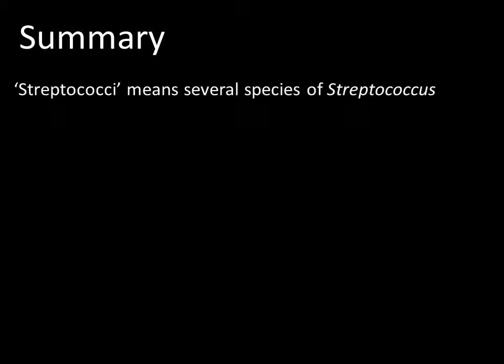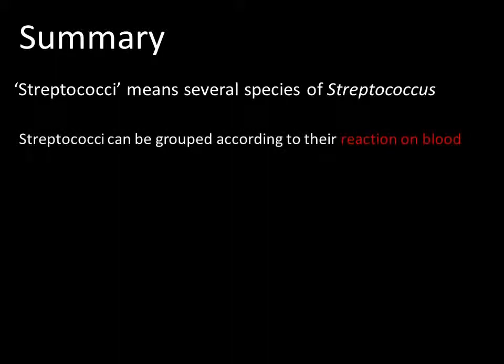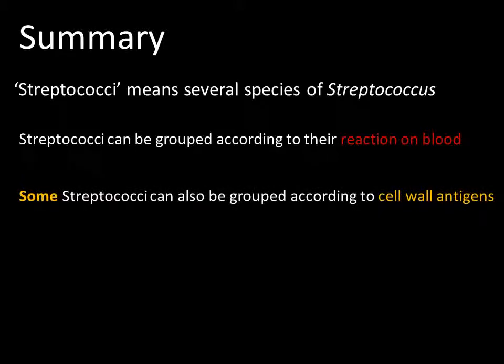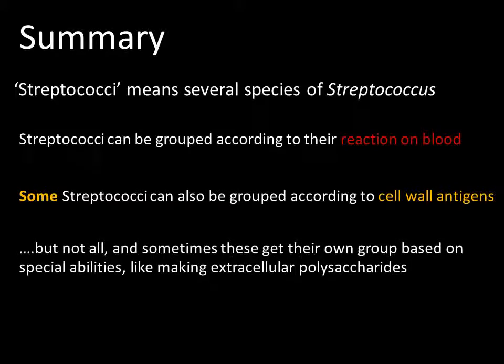So the main summary points: firstly, streptococci just means several species of the genus Streptococcus. Secondly, all streptococci can be grouped according to their reaction on blood, of which there are three types - alpha, beta, and gamma. Thirdly, some streptococci can be grouped according to their cell wall antigens, groups A to U, where the antigens we're looking for are sugars called Lancefield antigens. But importantly, not all can be grouped, and some get grouped according to special abilities they have, such as making extracellular polysaccharides, as we see with the Viridans group strep.